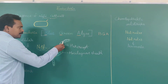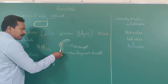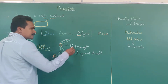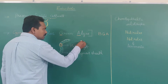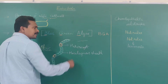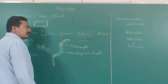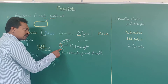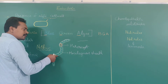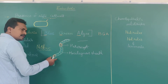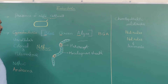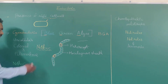Look here. This is a diagrammatic representation of Nostoc. It is a filamentous alga — a small thread-like structure. When we view this filamentous alga under the compound microscope, it appears like this. So Nostoc is one of the examples of cyanobacteria.